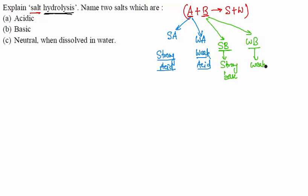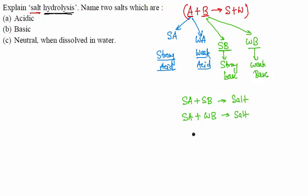So we have four types of salts basically. One in which strong acid reacts with strong base. Second, strong acid reacts with weak base. Third, weak acid reacts with strong base. These four types of salts are possible based on the nature of the acid as well as the base.